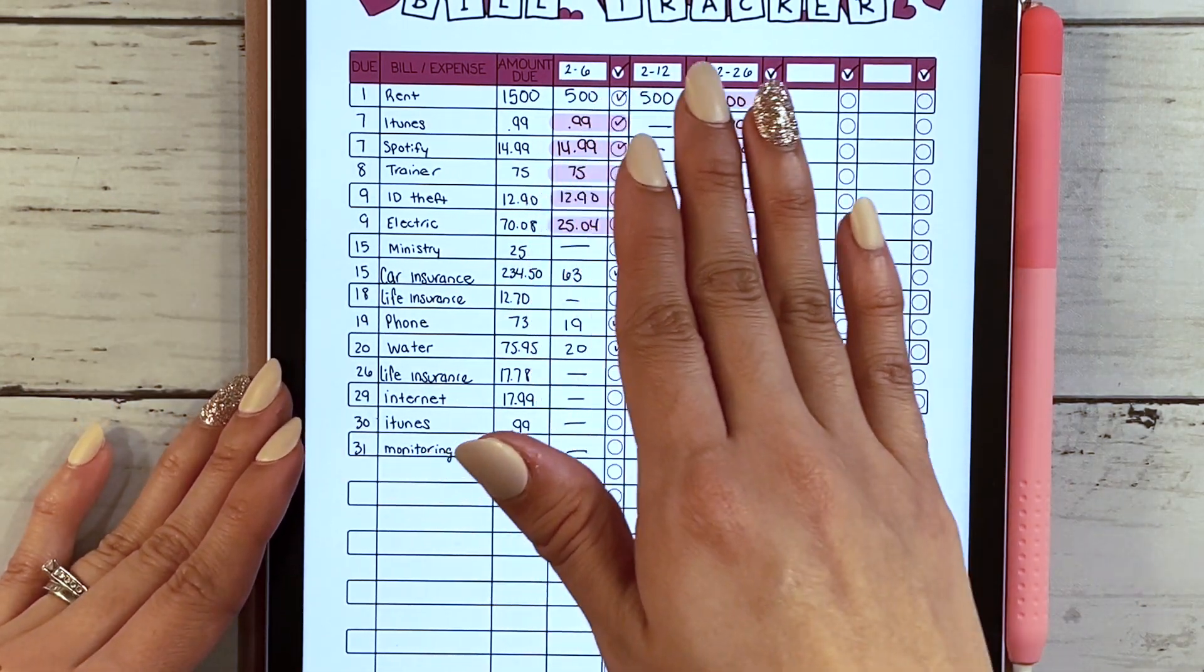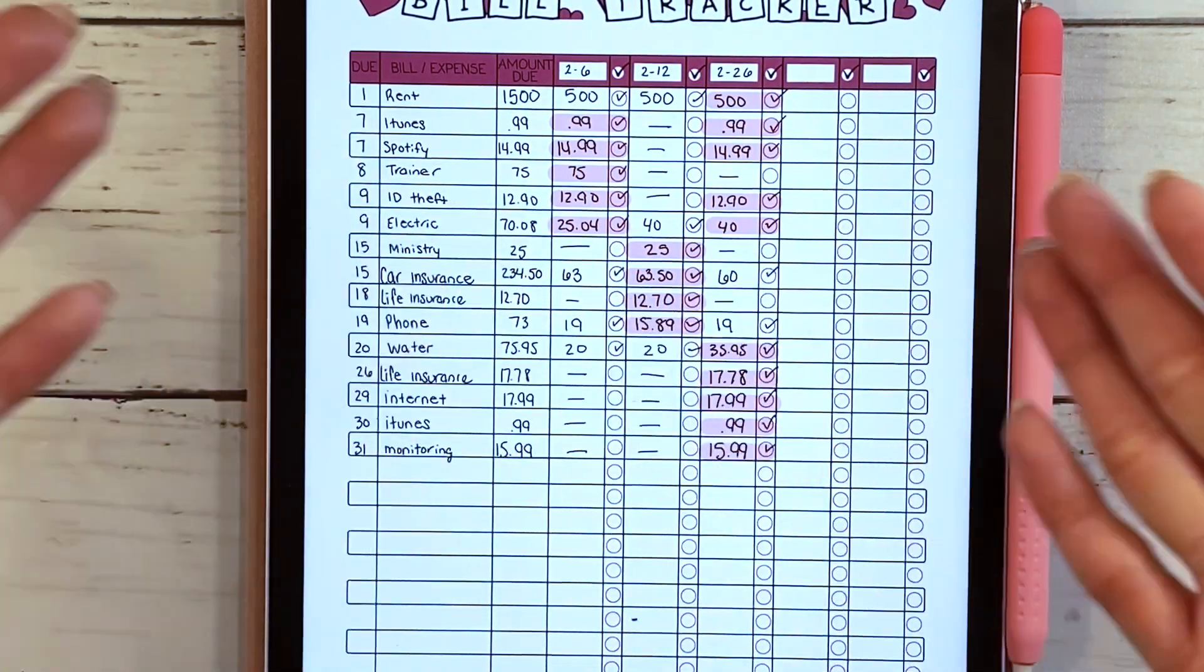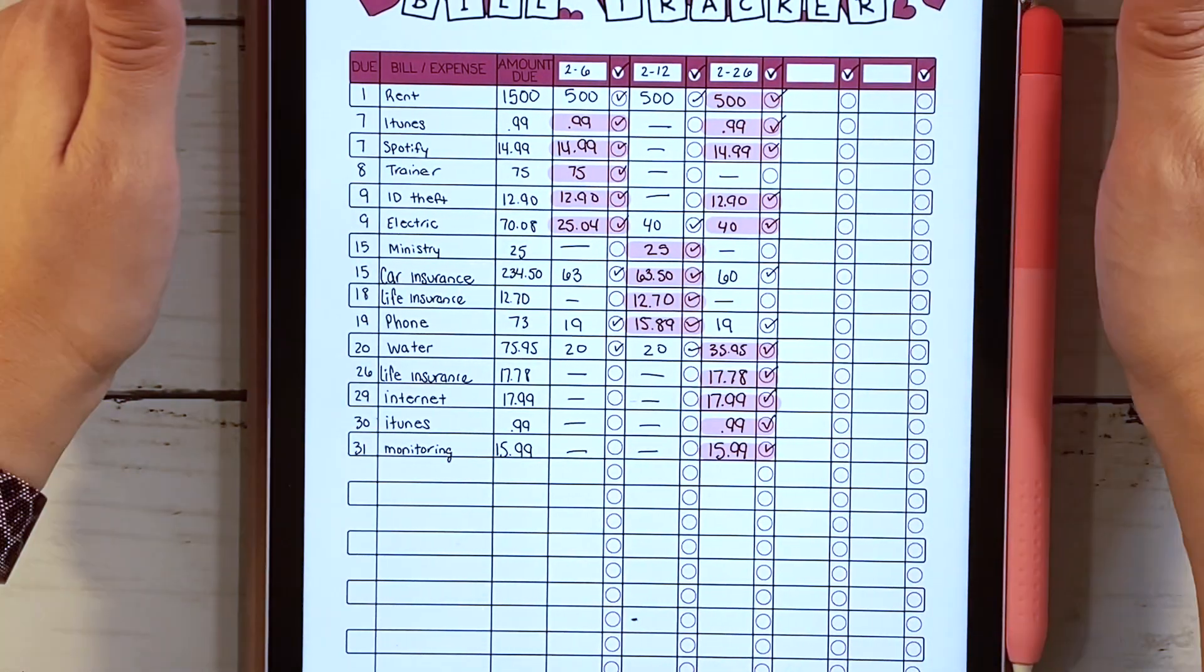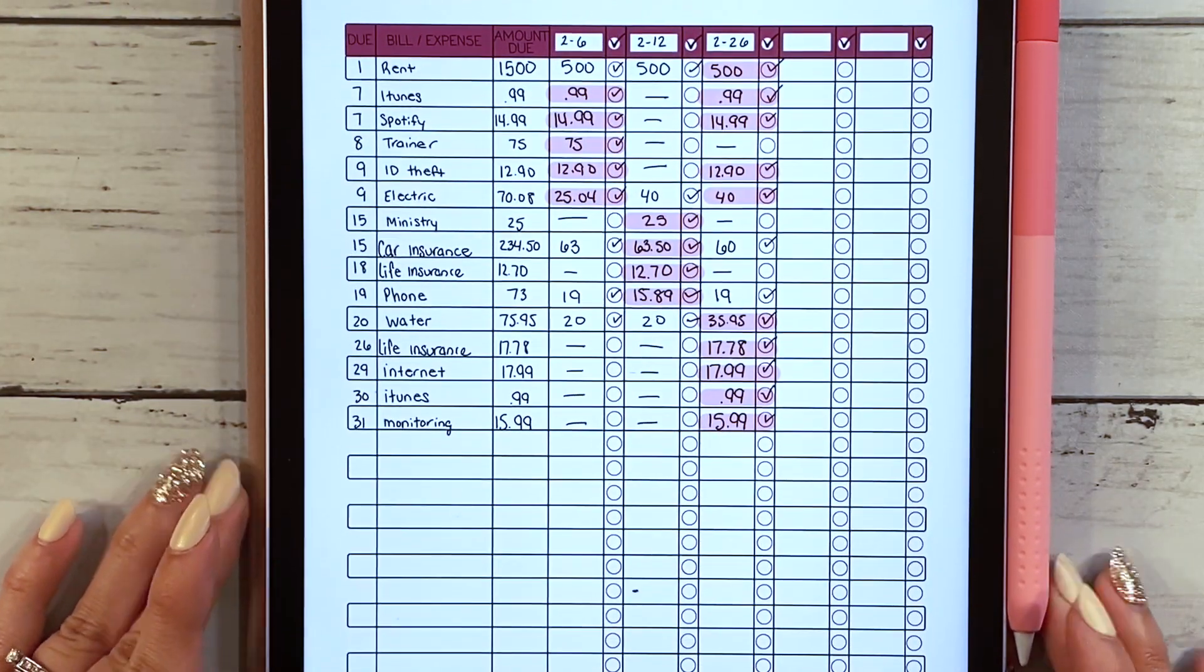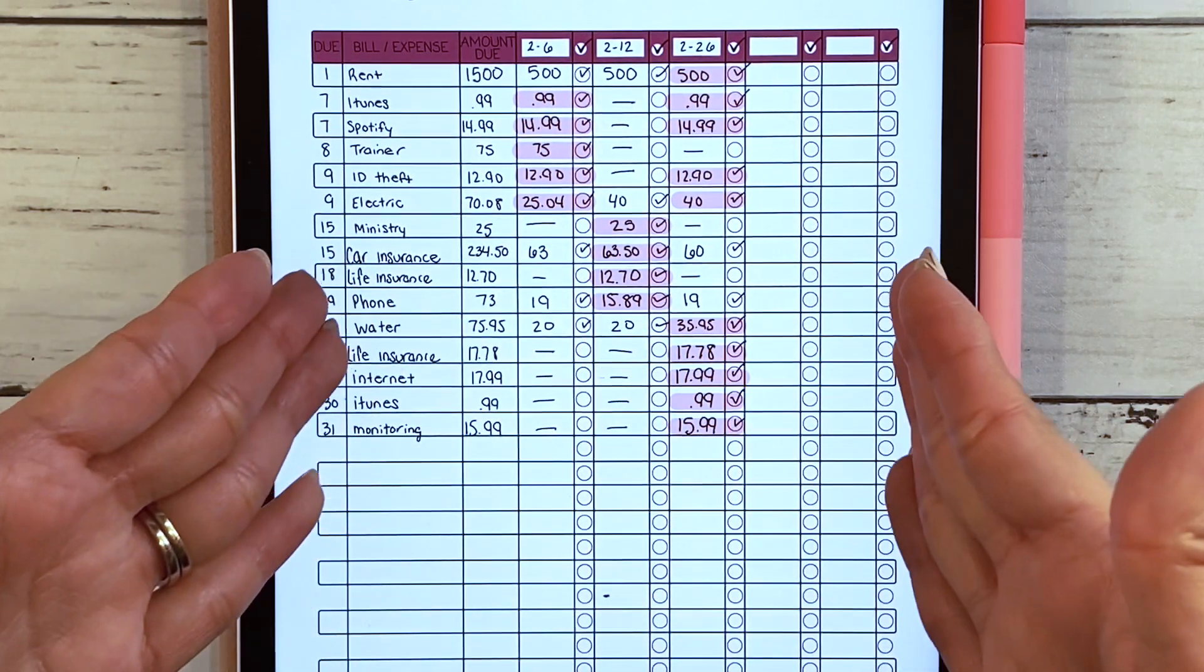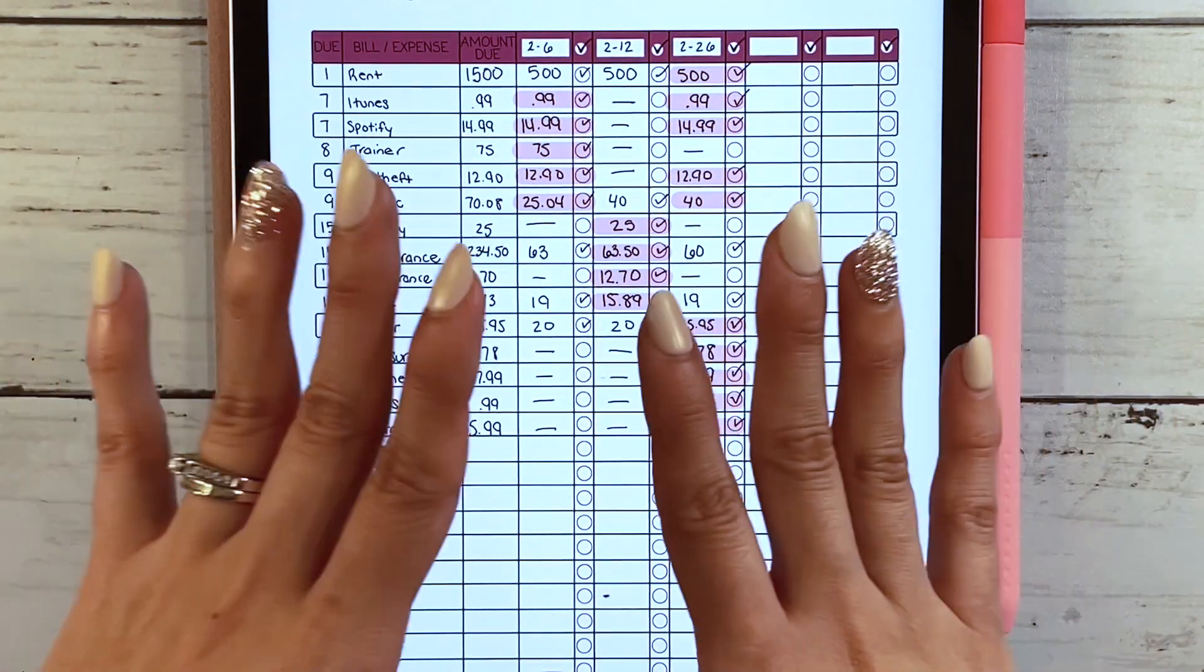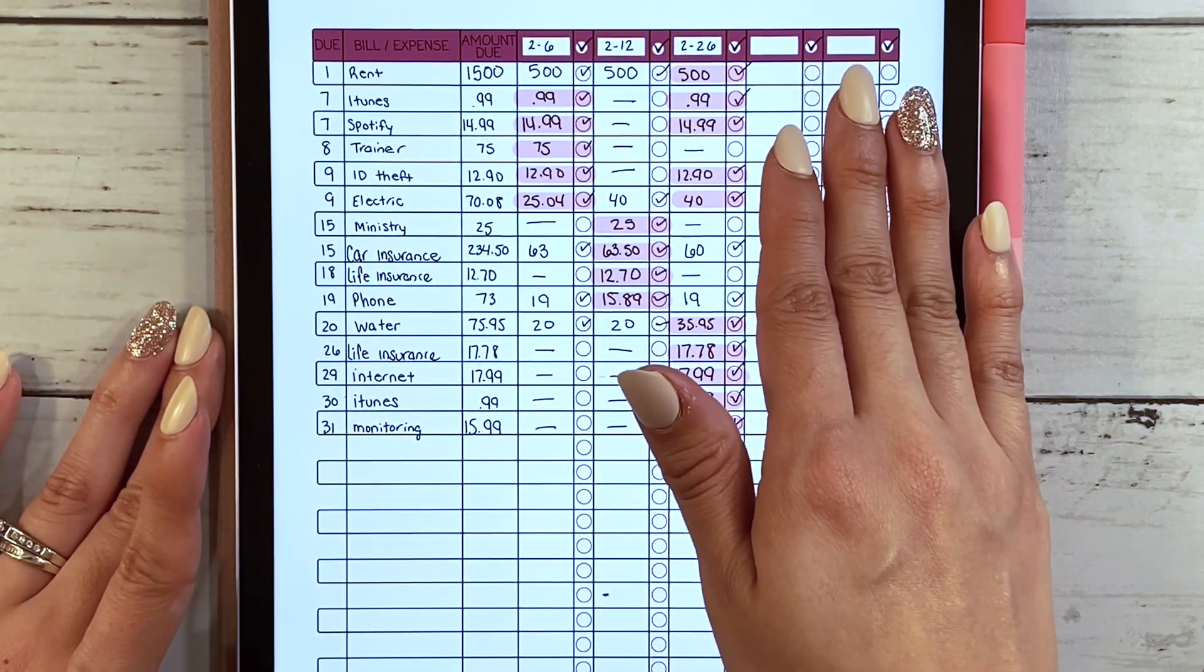Then you're going to write in the days that you expect a paycheck for whatever month you are currently in. Right now this is the February bill tracker, but you can utilize a worksheet, paper and a notebook, or my worksheets to break down your paychecks utilizing this worksheet.